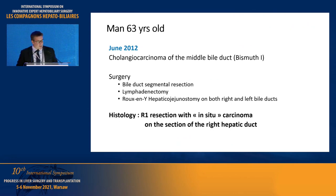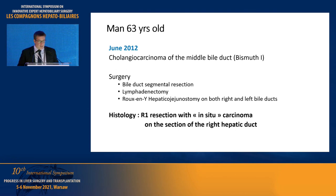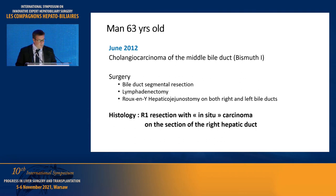This is a man of 63 years old who was managed initially outside in a peripheral centre. He was diagnosed with cholangiocarcinoma of the middle bile duct and the surgeon performed a curative intent surgery with a bile duct segmental resection associated with lymphadenectomy and a Roux-en-Y hepaticojejunostomy on both right and left bile ducts.